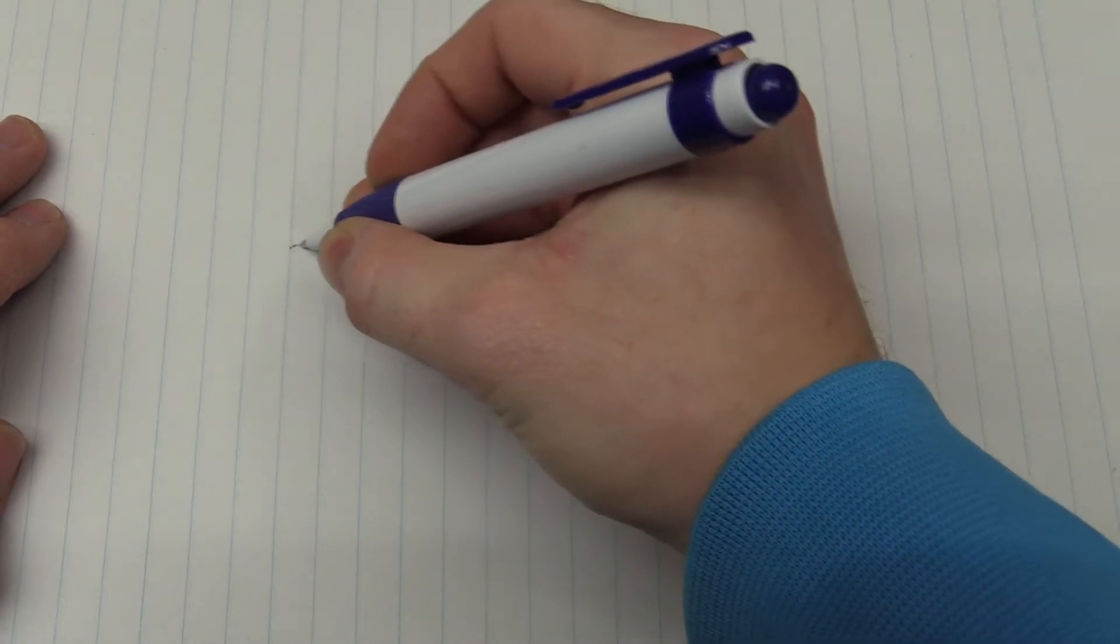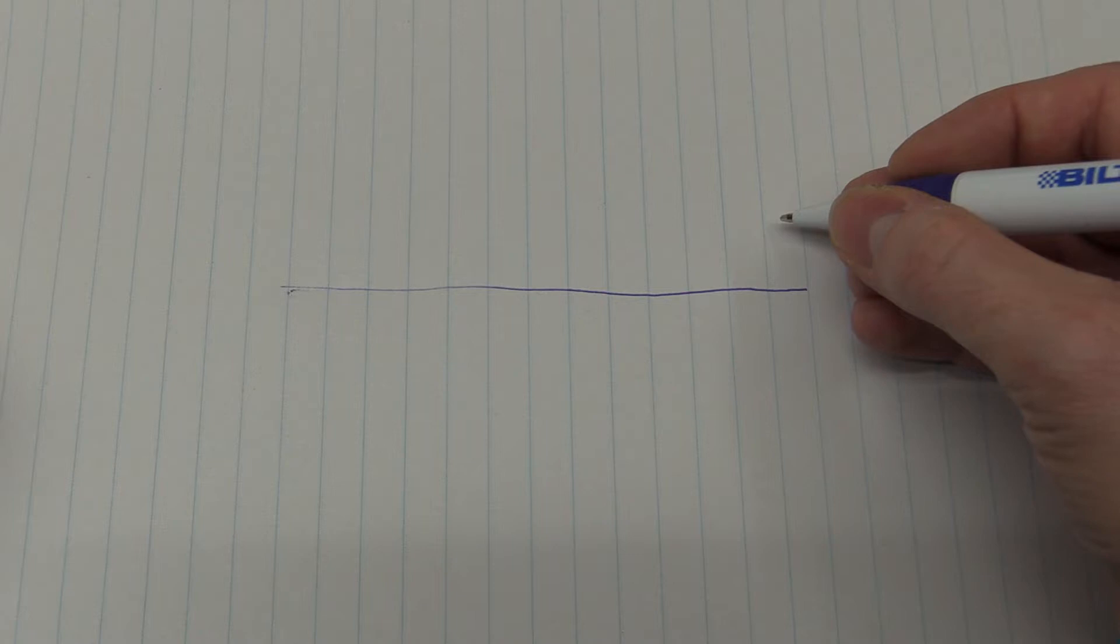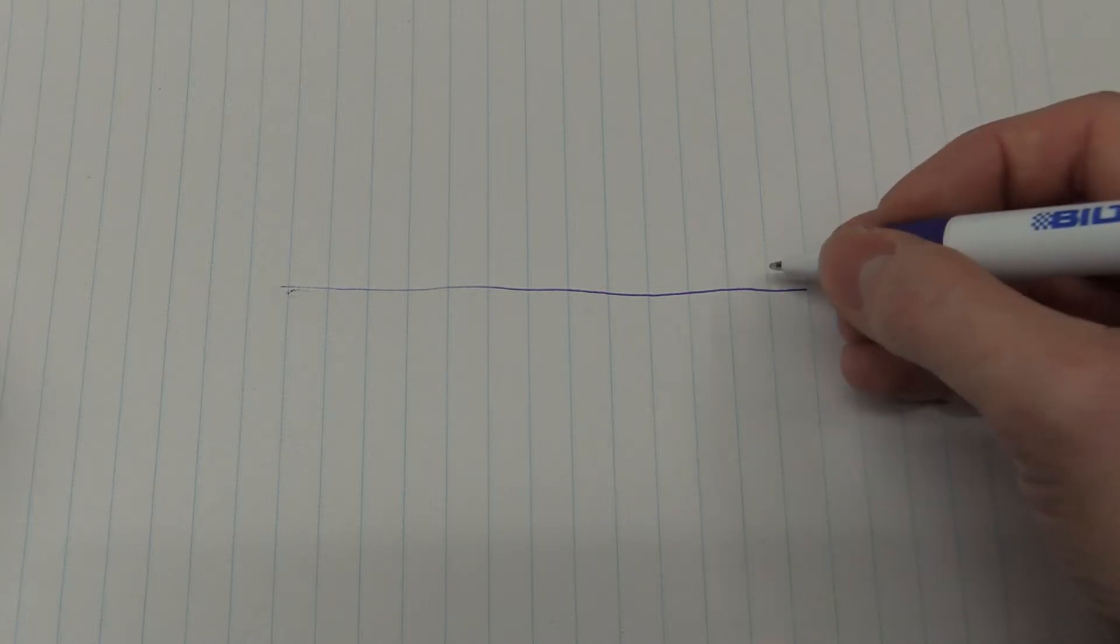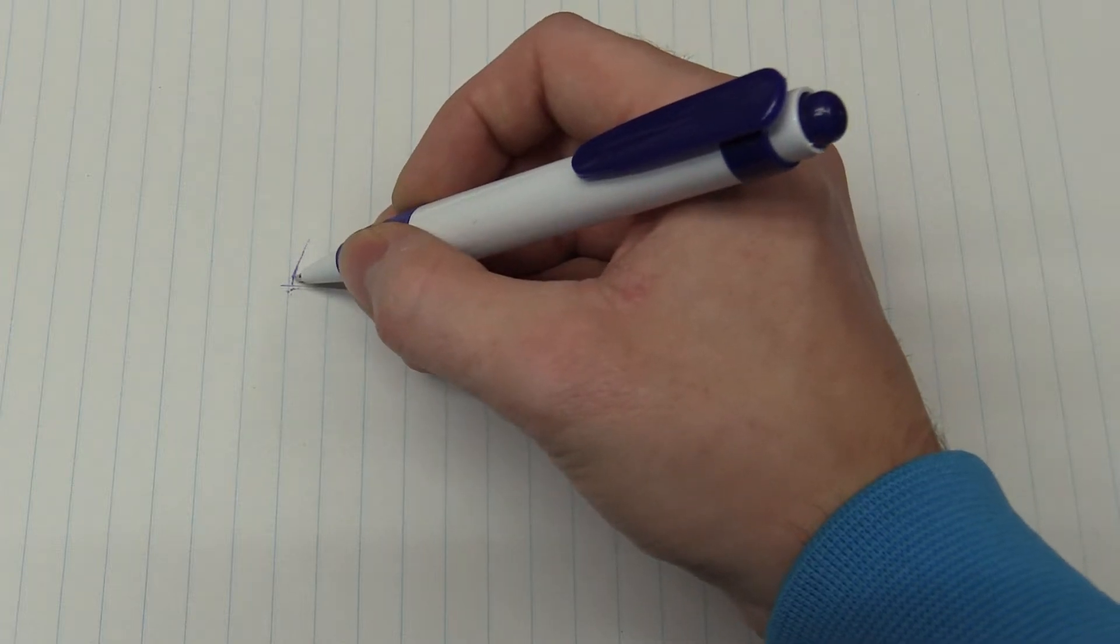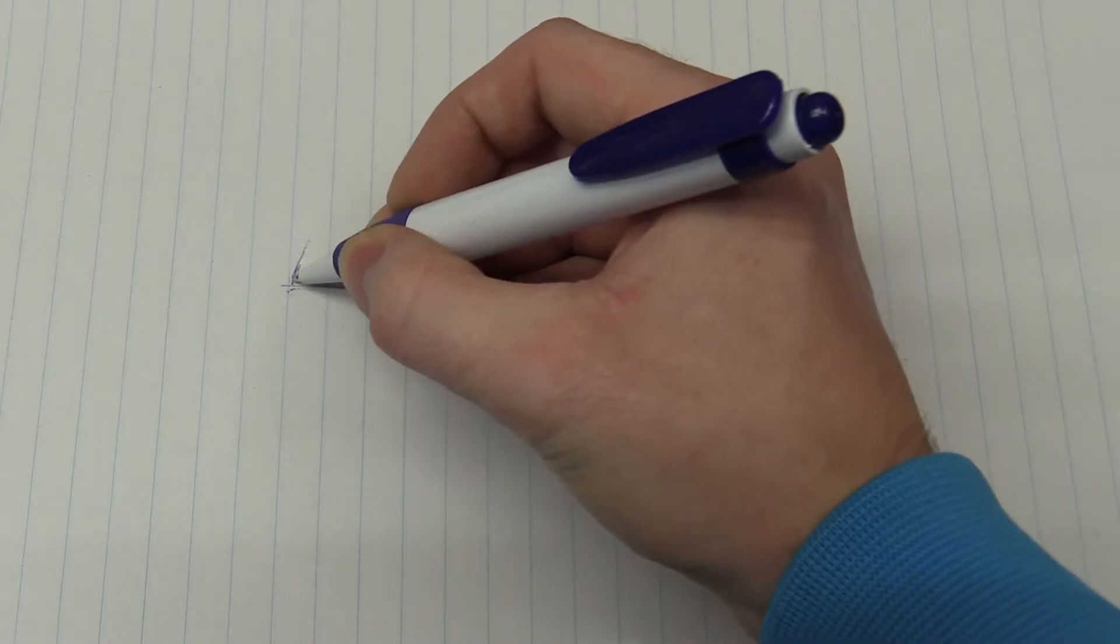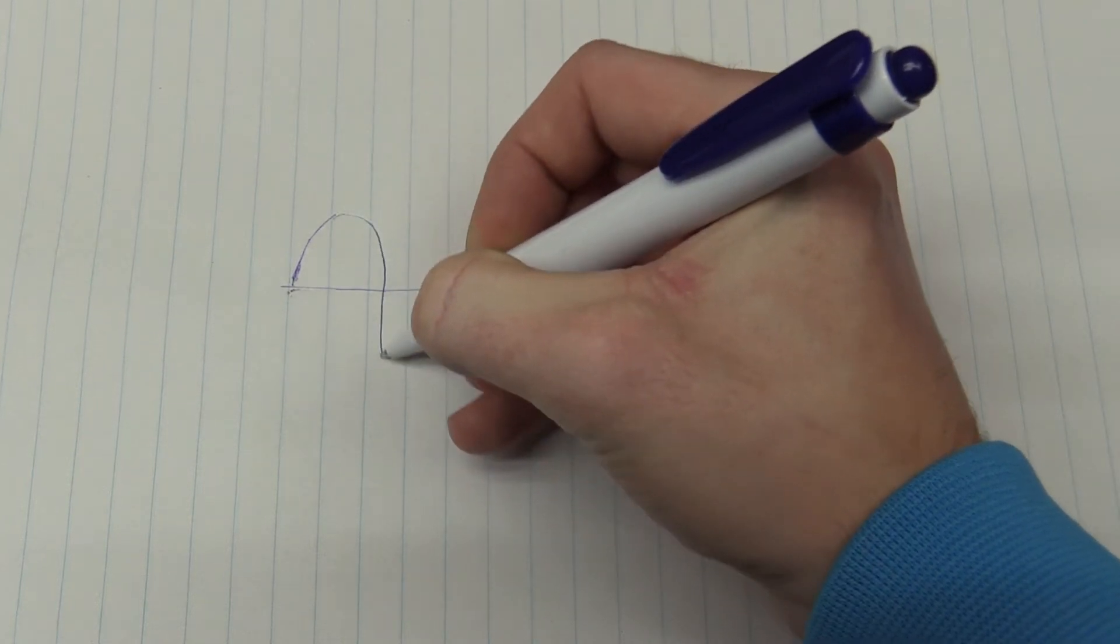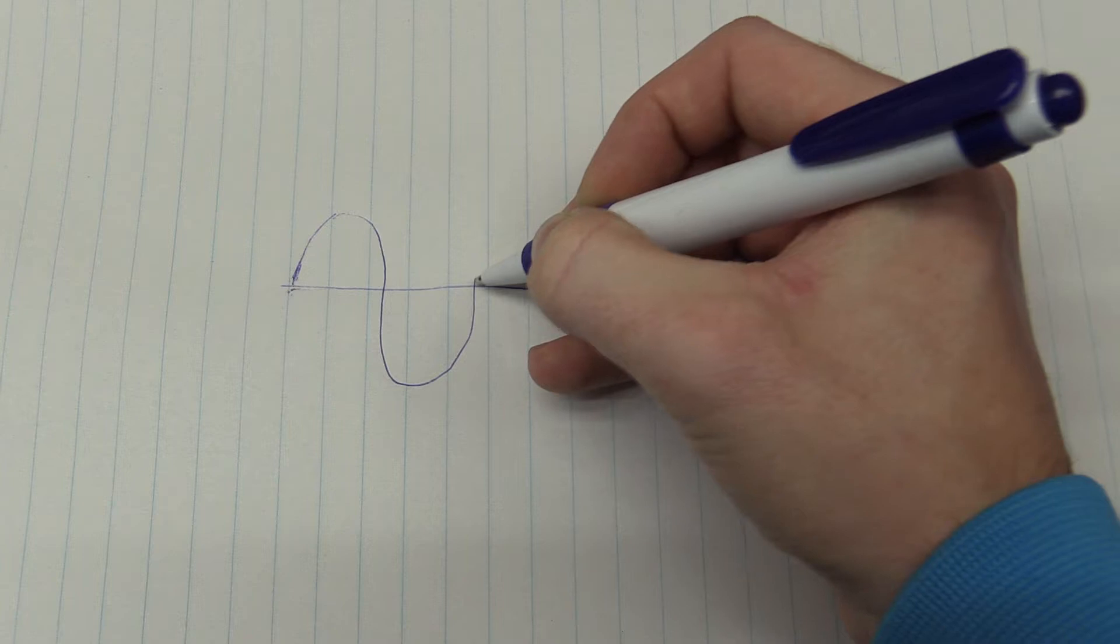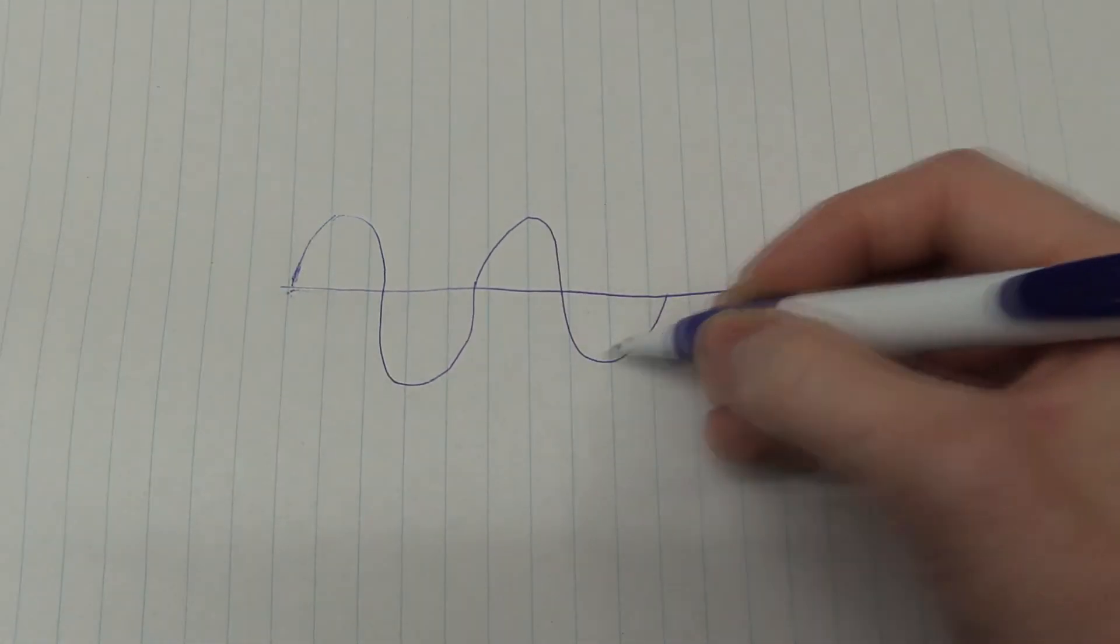So let's draw this on a piece of paper instead. Well, we can say that this line here means normal air pressure. Everything above this line will be a high pressure and everything below will be a low pressure. So if we draw a curve here corresponding to what I just said, it should go high, back to normal, down to low, back to normal, high, normal, low and normal.